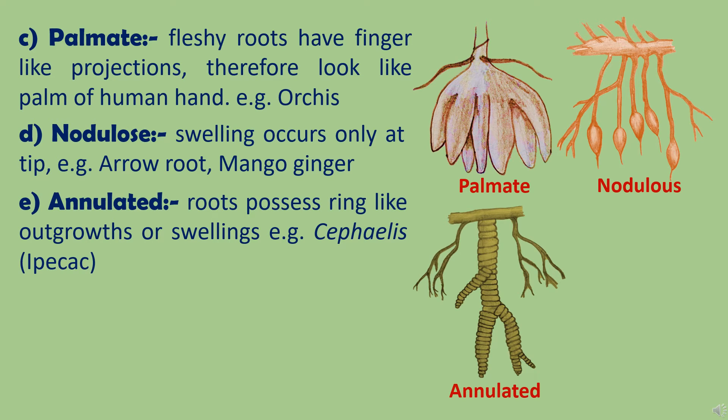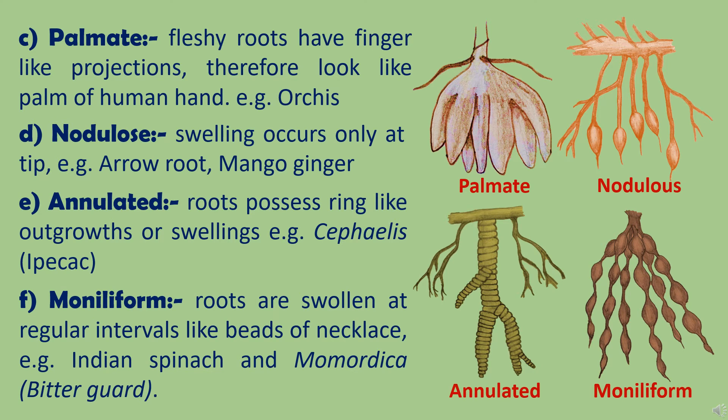The next category is annulated roots. These roots possess a series of ring-like outgrowths or swellings. They are found in the medicinal plant Cephalis, which is taken orally to cause vomiting in cases of suspected poisoning. Another kind of storage root is the moniliform root. These roots consist of a series of bead-like swellings alternating with contractions, which makes them look like beads of a necklace as shown in the picture. Moniliform roots are found in bitter gourd and Indian spinach.